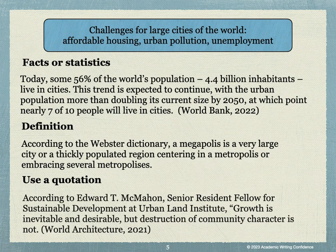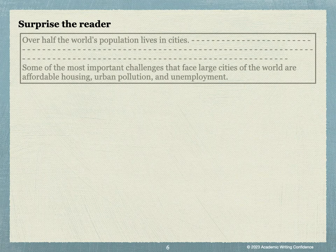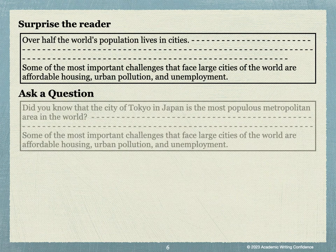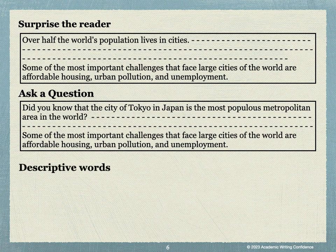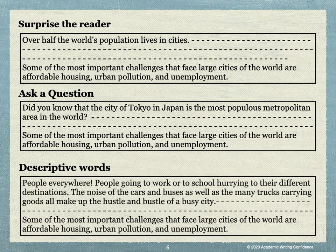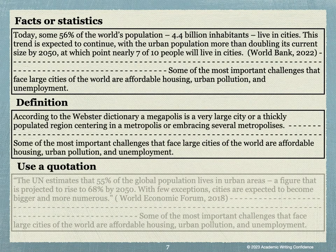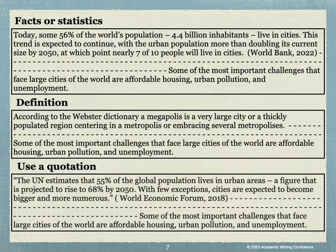As you can see, each of these different types of hooks creates a different beginning to your introduction paragraph. Let's try putting each of these hooks into an actual introduction paragraph. For the Surprise the Reader type, you would write your hook sentence, then give some more background information, and then finally finish with your thesis statement including your three ideas of what the challenges are that a large city faces. The same approach applies if you use a question, descriptive words, or any of the other three types of hooks.